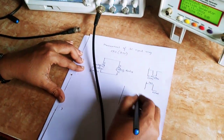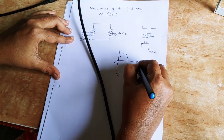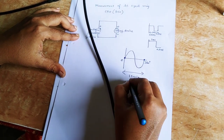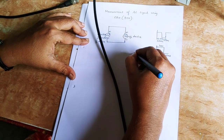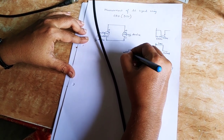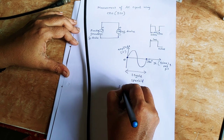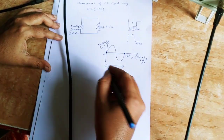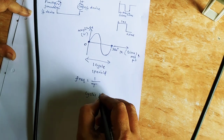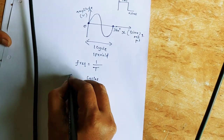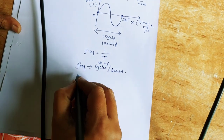Now we calculate frequency. From the starting point at 0 degrees to 360 degrees is one cycle or one period. The x-axis represents time and the y-axis represents amplitude. The corresponding units are volts for amplitude and milliseconds, microseconds, or seconds for time. Frequency is equal to 1 divided by time period, and is defined as the number of cycles per second — a very basic question commonly asked in interviews.